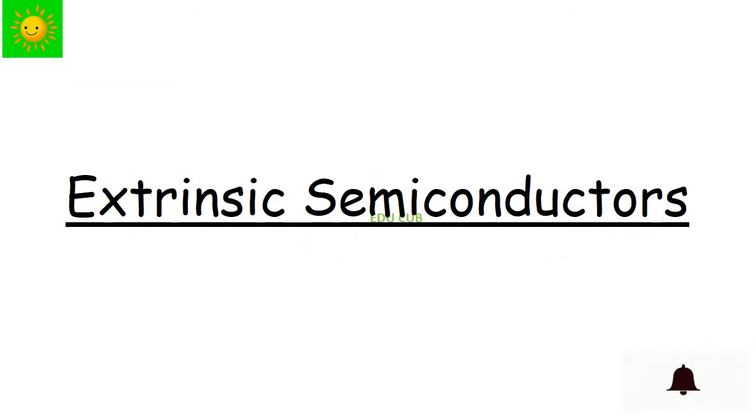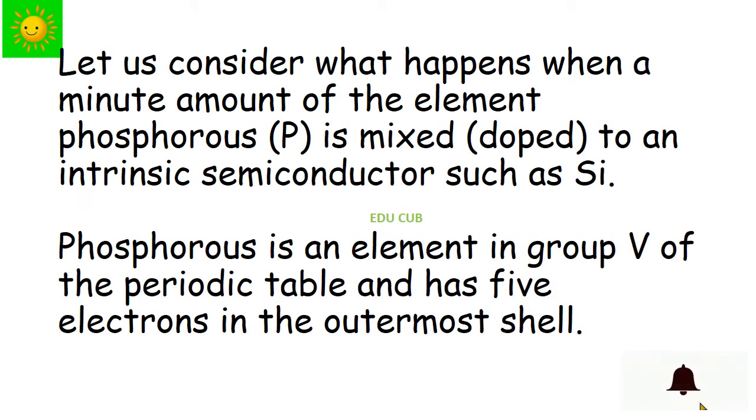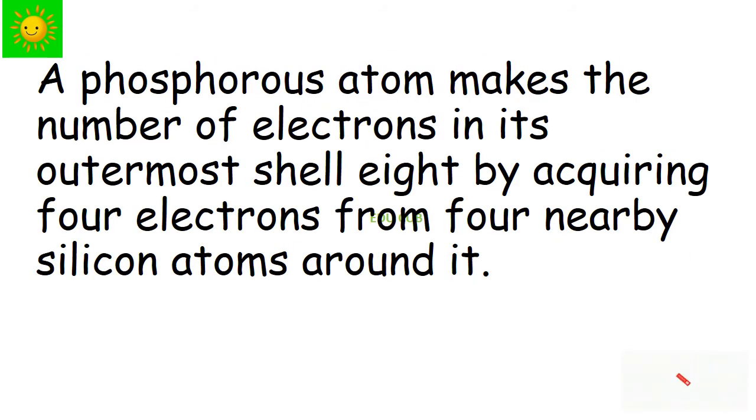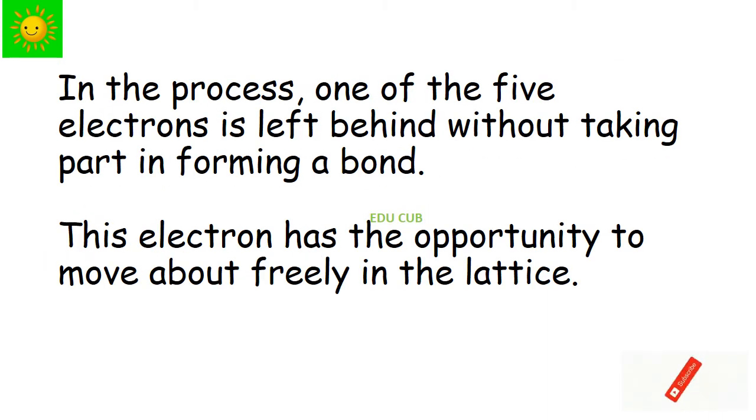Let's discuss extrinsic semiconductors. Let us consider what happens when a minute amount of an element, phosphorus, is mixed to an intrinsic semiconductor such as silicon. Phosphorus is an element in group 5 of the periodic table and has 5 electrons in the outermost shell. A phosphorus atom makes the number of electrons in its outermost shell eight by acquiring 4 electrons from 4 nearby silicon atoms around it. In the process, one of the 5 electrons is left behind without taking part in forming a bond.